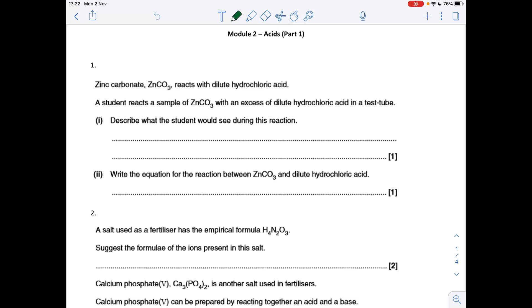The first part of question one: a student reacts a sample of zinc carbonate with an excess of dilute hydrochloric acid. What would the student see? There'd be two things: bubbles of carbon dioxide, and the fact there's excess acid means all of that zinc carbonate will dissolve. Second part of the question, the equation for the reaction. It doesn't mention state symbols, so I'm not going to bother. ZnCO3 plus 2 moles of HCl gives ZnCl2 plus H2O plus CO2.